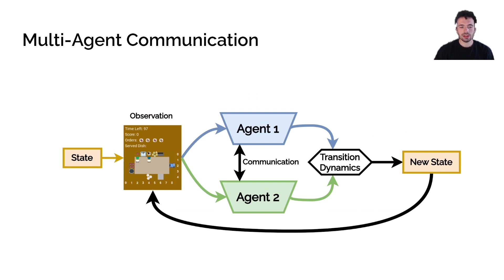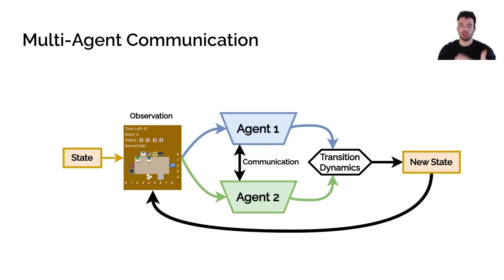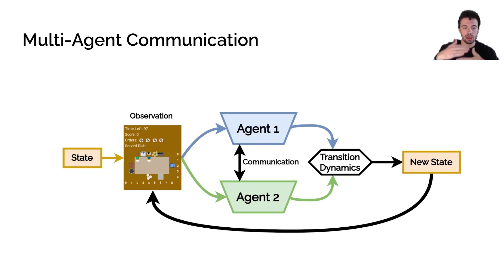We also want these agents to communicate with each other. We apply that same framework for both agents at the same time. The output of the agents is fed to the transition dynamics, which tell us how the state updates — because the state is dependent on both agents' behavior. We also add a communication protocol where the two agents can send messages to each other.